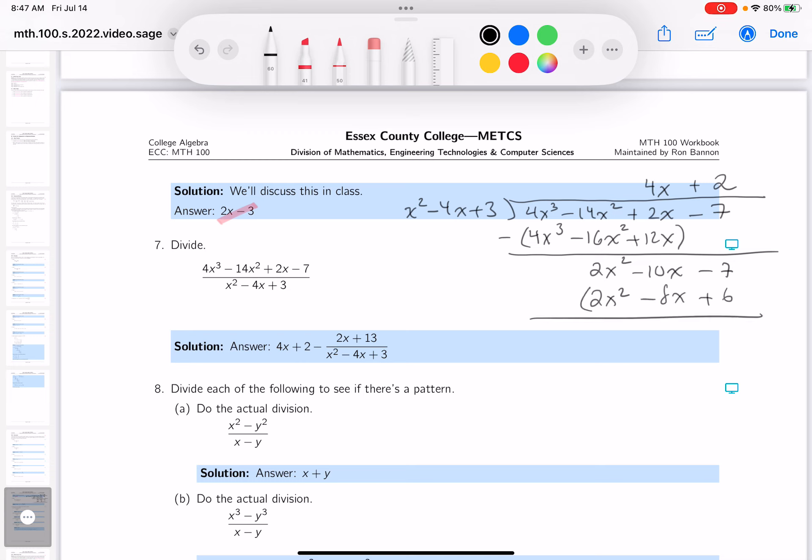What are you going to do now? You're going to subtract. 2x squared minus 2x squared, there are no x squareds. Minus 10x minus a minus 8x is minus 2x. And then, minus 7 minus 6 is minus 13.